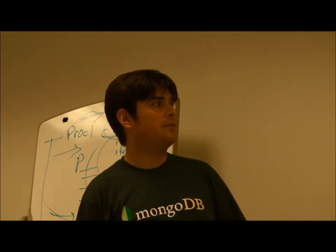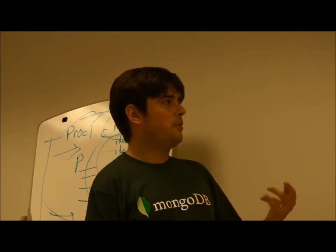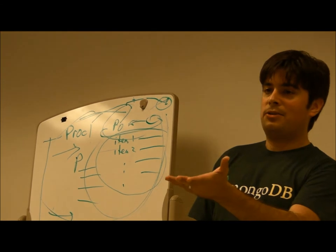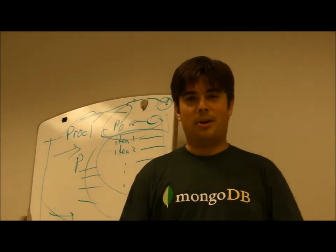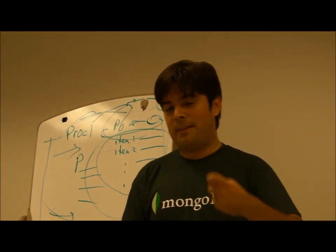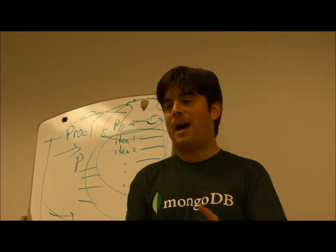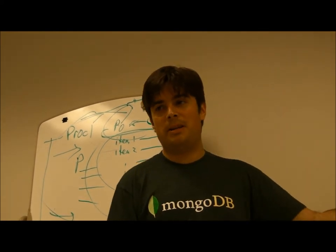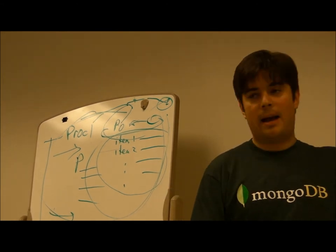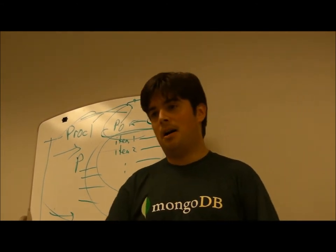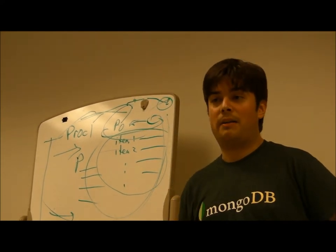It's open source under the AGPL license, and the drivers are under the Apache license. How does 10gen work as a commercial company? So they own the copyright. If you want your patch to go into their version of MongoDB, they make you sign a document signing over the copyright to them. But you can go ahead and make a fork of it, just like forking an open source project you don't have the copyright to.